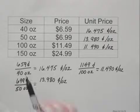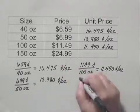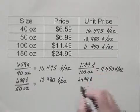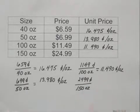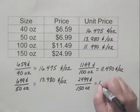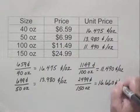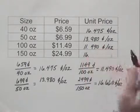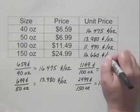And then finally, the 150 ounce container, $24.99 is 2,499 cents over 150 ounces. We do that division, we get 16.660 cents per ounce. And we'll write that in our table, 16.660 cents per ounce.